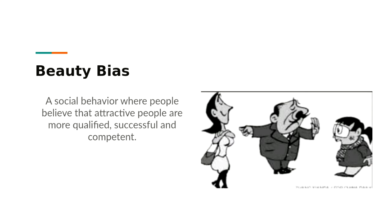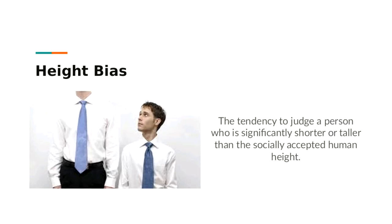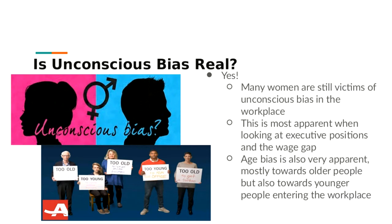Height bias is the tendency to judge a person who is significantly shorter or taller than the socially accepted average height. If someone is way below average you look at them differently, just as you might look differently at someone of exceptional height like a basketball player. A way to avoid this is blind screenings — phone or video calls — so you aren't aware of a person's height and can judge them purely on their skills.